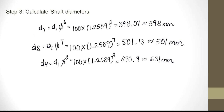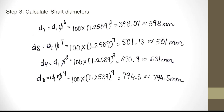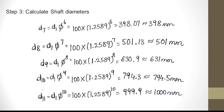D9 is D1 × phi raised to 8: 100 × 1.2589 raised to 8, which we round off to 631 mm. D10 is D1 × phi raised to 9: 100 × 1.2589 raised to 9 gives 794.3, which we round off to 794.5 mm. The last diameter, D11, is 1000 mm.